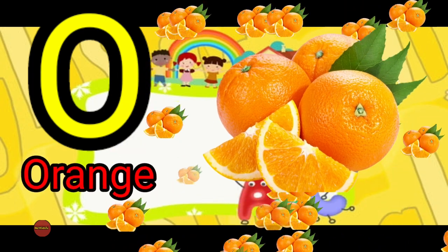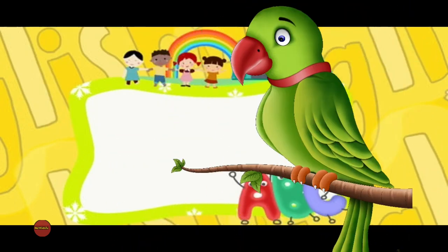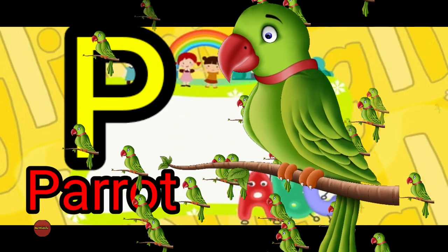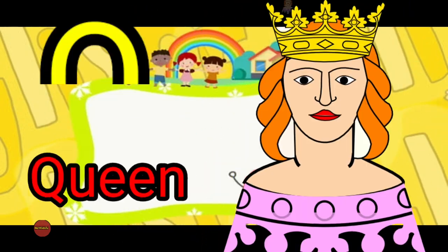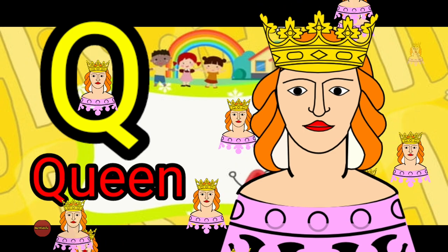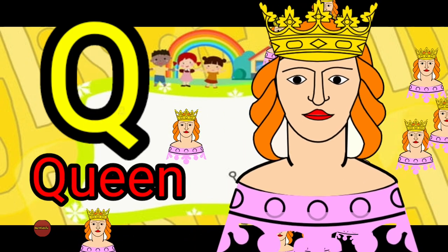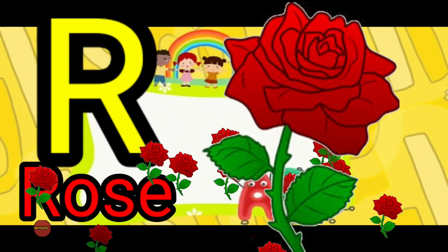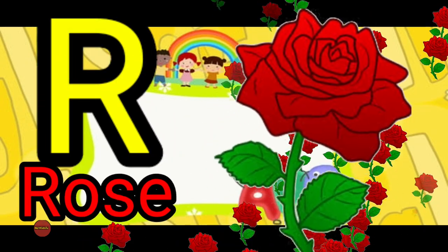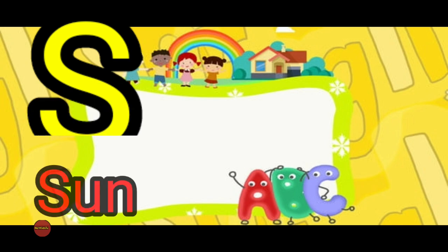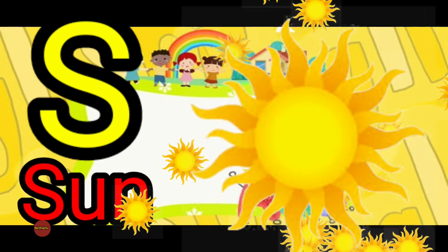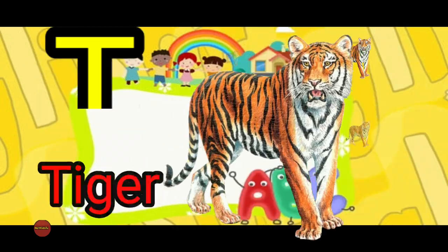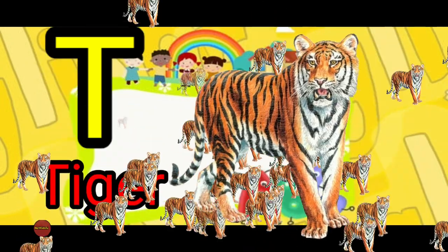N for nose, O for orange, P for parrot, Q for queen, R for rose, S for sun, T for tiger.